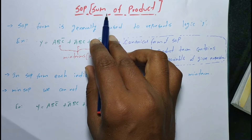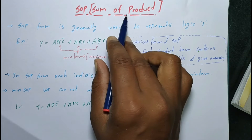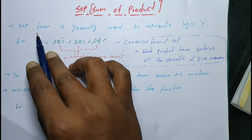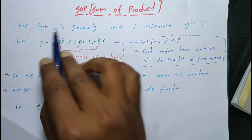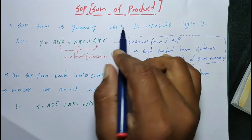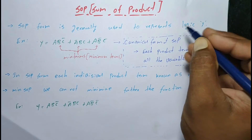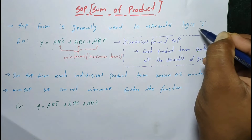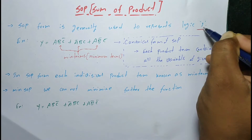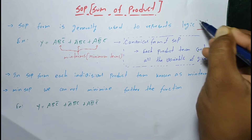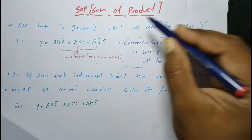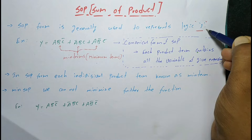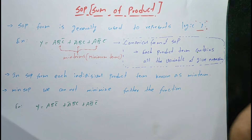SOP in digital electronics stands for Sum of Product. SOP form is generally used to represent logic 1.